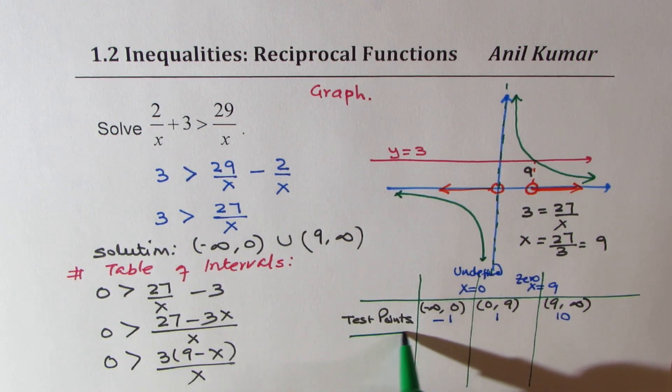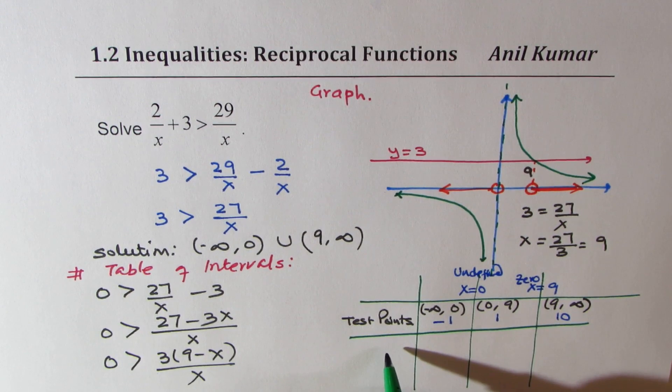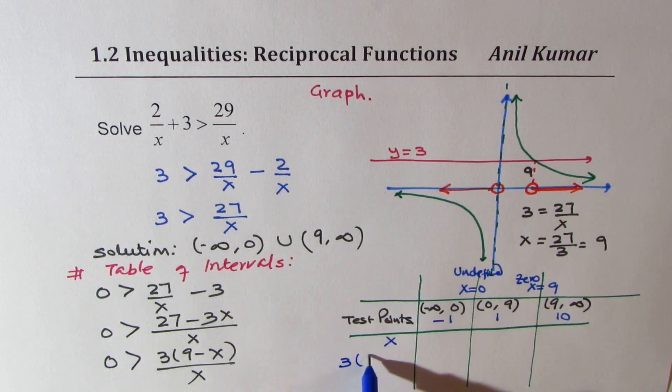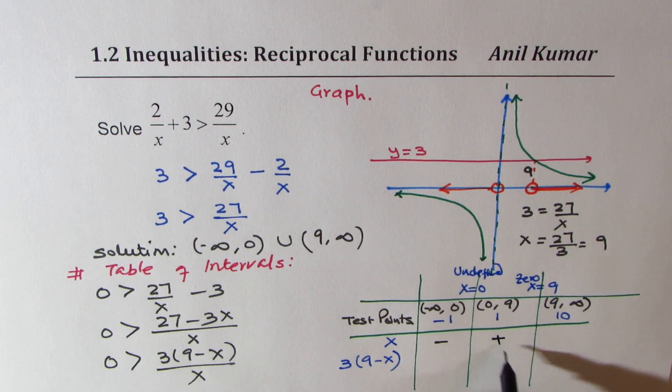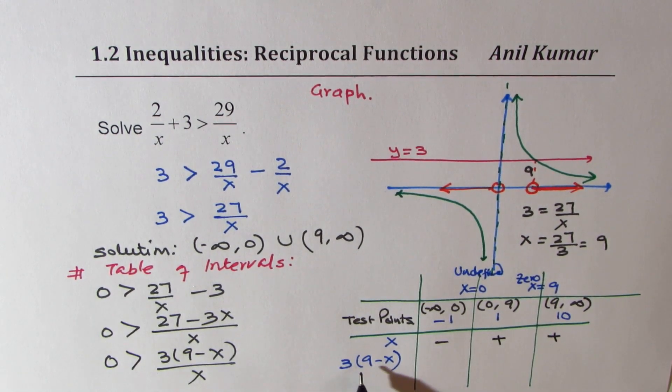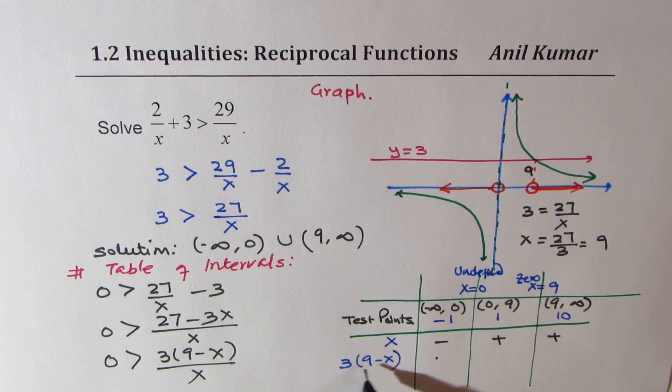Now what do we test? We'll test these two factors. We can test the value for x and also the factor 3(9 - x). As far as x is concerned, for a negative value it will be negative. For positive, it will be positive. Now 9 - x is going to be positive. If I substitute x as -1, it becomes positive.